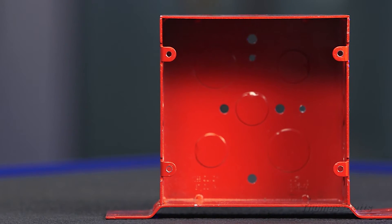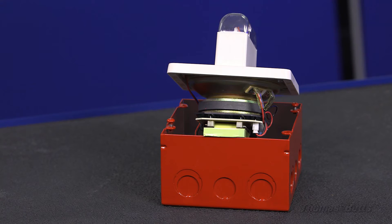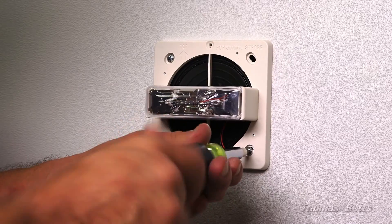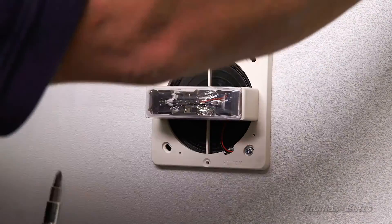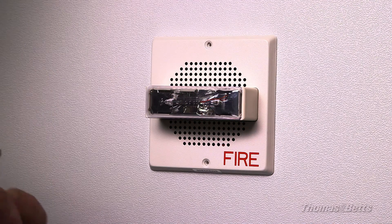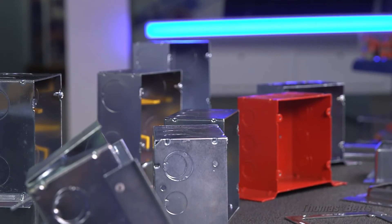Thomas and Betts' Steel City five square line offers red boxes that meet NEC code requirements. Standard fire alarm devices are designed to fit in a four square box. Now, within a five square box, these standard devices can be quickly and easily installed.